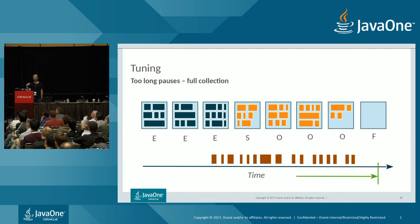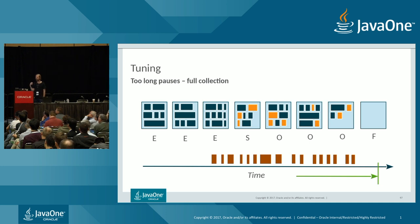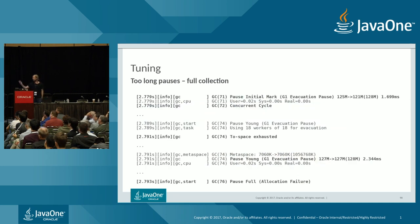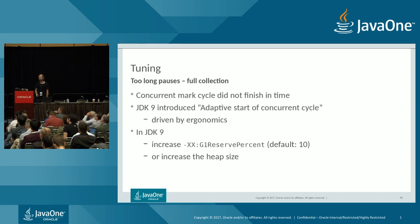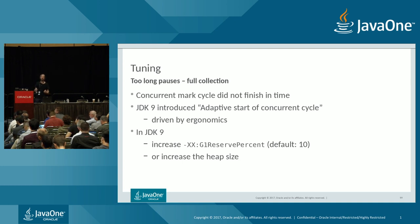Hopefully concurrent marking finishes before the heap runs out of space. When it finishes, G1 gets the liveness information it needs and discovers that only a few objects are live in each old region. Going back to our problematic full pause: we see the full pause at the bottom due to allocation failure, to-space exhausted before that, and concurrent cycle started even earlier. The critical thing we do NOT see is that the concurrent cycle finished — concurrent marking didn't finish in time, so G1 couldn't get liveness information to collect old regions and had to fall back to a full collection.